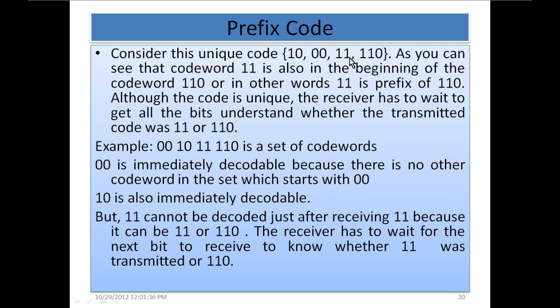Since there are two codes — one is 1 1 and the other is 1 1 0 — the decoder doesn't know, if it receives only 1 1, whether the transmitted code was 1 1 or 1 1 0. So it has to wait until the next bit is received.